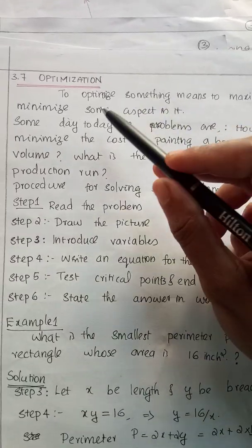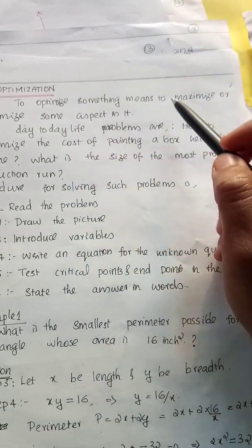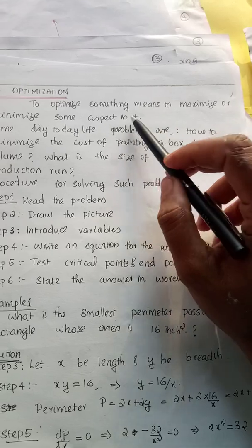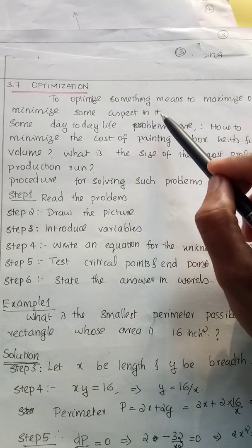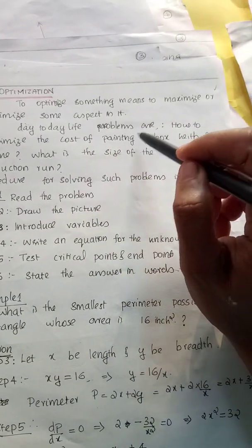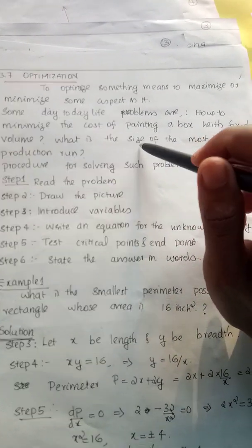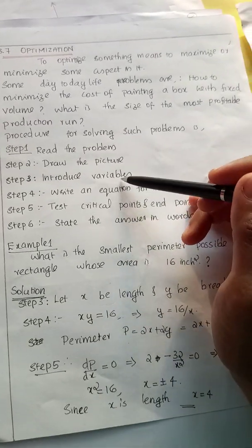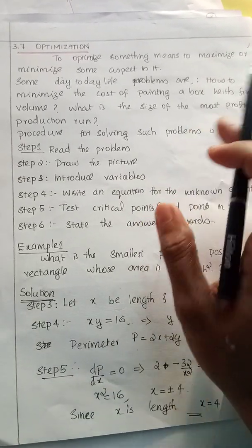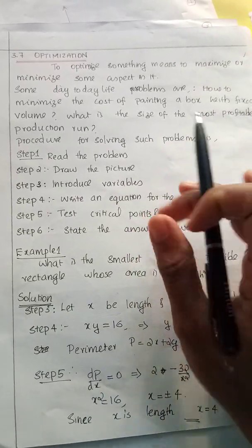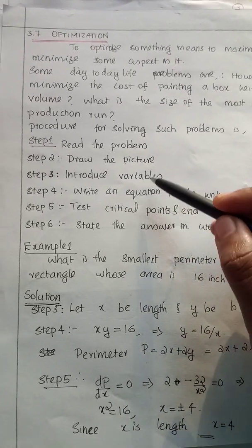Optimization is the last session we are going to cover. To optimize something means to maximize or minimize it. Some day-to-day life problems include how to minimize the cost of painting a box with a fixed volume. Our question will be to maximize or minimize some aspects of a problem, and we have to analyze the problem clearly.